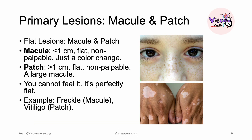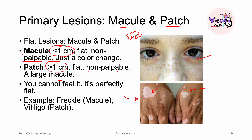A macule and patch are all about color — there's no texture, and if you run your finger over it you will feel nothing; it is just a color change. The only difference between a macule and a patch is size. A macule is typically less than one centimeter — flat and non-palpable. A patch is bigger than one centimeter; it is non-palpable and is technically a larger macule. A freckle is an example of a macule, and vitiligo is an example of a patch.